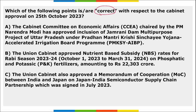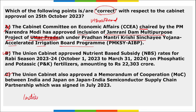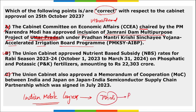Regarding cabinet approvals, options B and C are correct. Option A is wrong — it says the Jamrani Dam Multipurpose Project is in UP, but it is actually located in Uttarakhand. The 7th edition of Indian Mobile Congress was held, inaugurated by PM Modi.